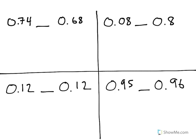Starting at the top left, what I do is I put these two decimals, one on top of the other, lining up the decimal points and the places. So I have 0.74, and then I have 0.68. And what I do next is I start at the left, and I move over comparing the digits.